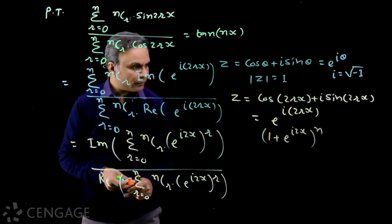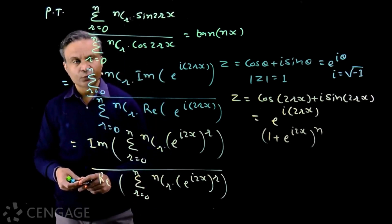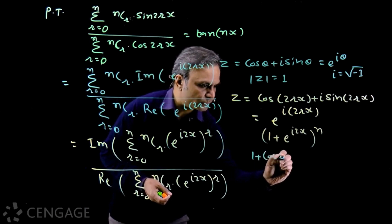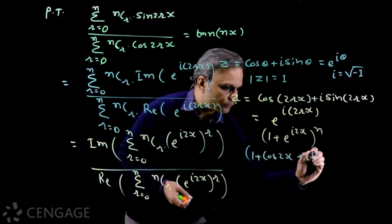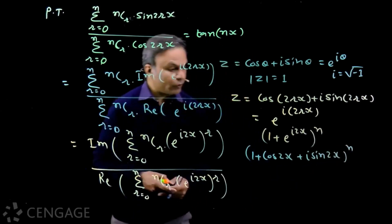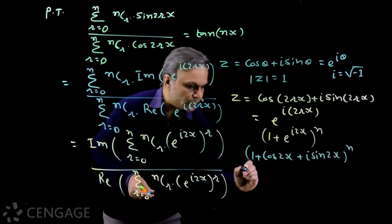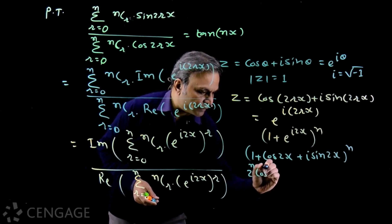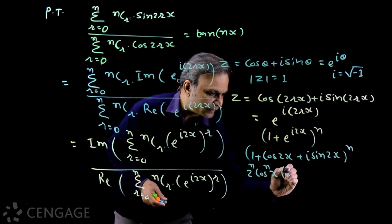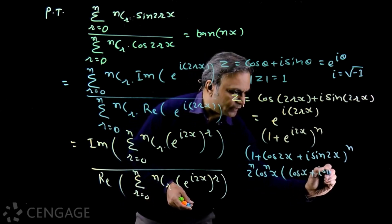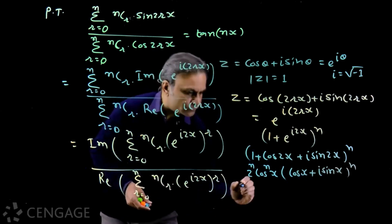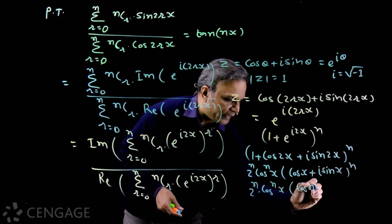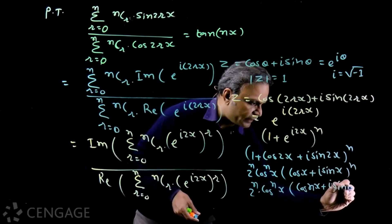We simplify this complex number: (1 + cos(2x) + i sin(2x))^n. Using 1 + cos(2x) = 2cos²x and sin(2x) = 2 sin x cos x, we get (2cos x)^n multiplied by (cos x + i sin x). Applying De Moivre's theorem, this becomes 2^n · cos^n(x) multiplied by (cos(nx) + i sin(nx)).